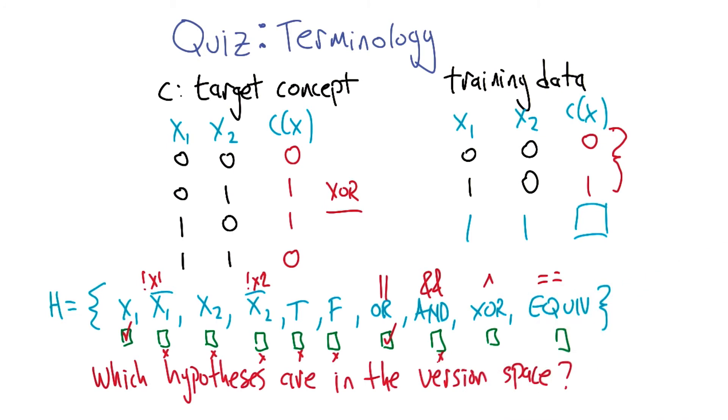Xor, well, I already know it's consistent with Xor because I happen to know that that's the target concept. Yeah. And then equiv would be not consistent. Though interestingly, not equivalent would be consistent. Yes, because not equivalent is Xor. Oh yeah, that's right. All right, so that's it. X1, or, and Xor. Excellent. Cool.